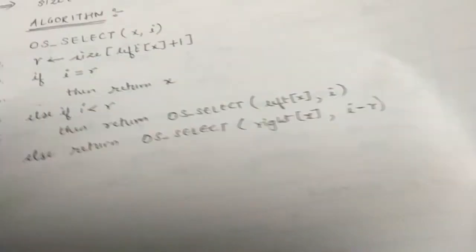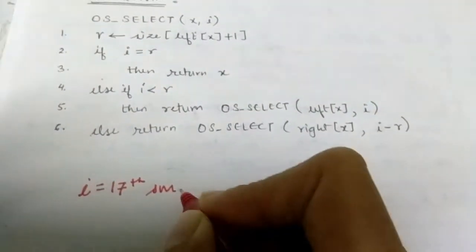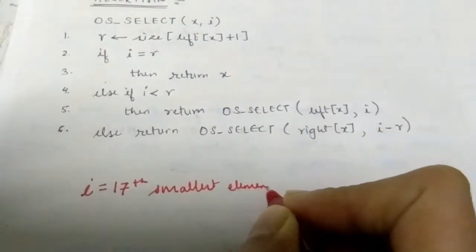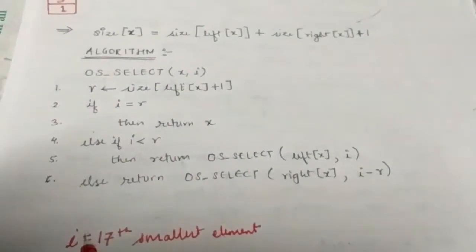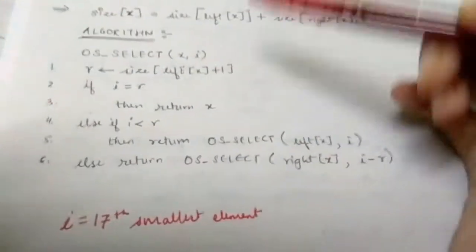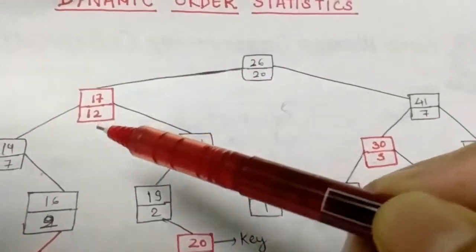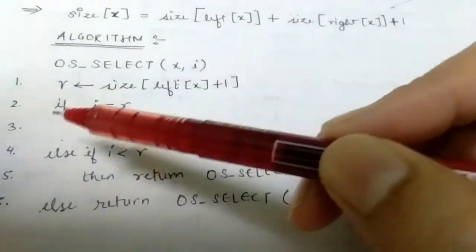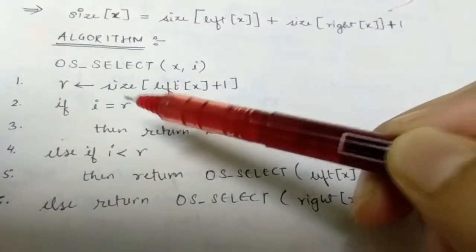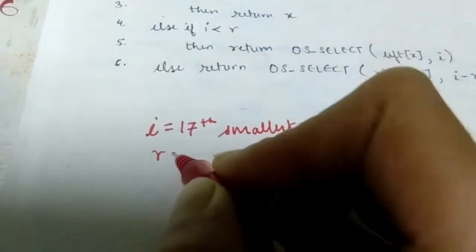Let's say we want to identify the 17th smallest element, so i equals 17. We start from node 26, and r is computed as size(left(x)) plus 1. The left subtree size is 12, so r equals 12 plus 1, which gives r equals 13.